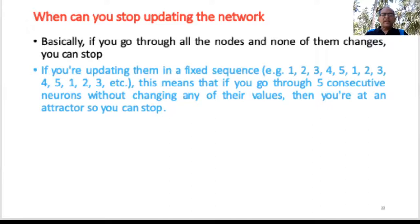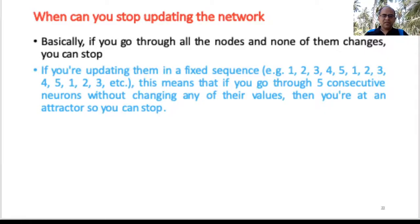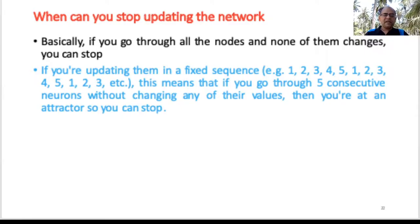Another obvious question: when can I stop updating the network? The answer is simple: if you go through all the nodes and none of them changes, that is the stopping criteria — stop. If updating in a fixed sequence such as 1, 2, 3, 4, 5 repeatedly, and you go through 5 consecutive neurons without any change in values, then you can stop. Both methods are fine.